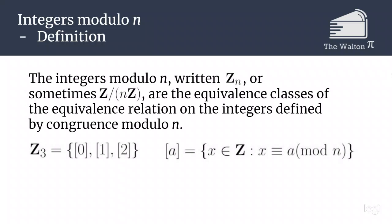In Z_3, there are going to be three equivalence classes, the class of 0, the class of 1, and the class of 2, which are the possible remainders we can get when we divide an integer by 3.